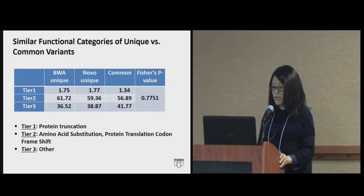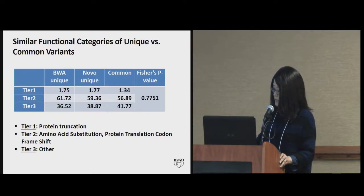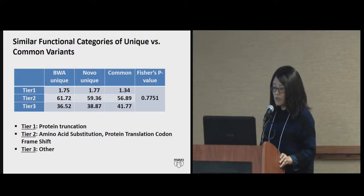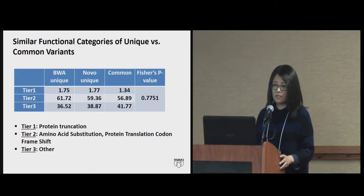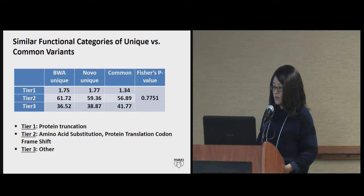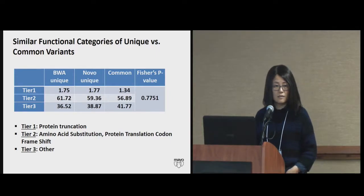We also looked at functional category, categorizing variants into three tiers: tier one is protein-truncating; tier two is amino acid substitution and protein-translation codon frameshift; tier three is other variants without many known functions. Again, the breakdown is similar among all three categories of common versus unique variants.